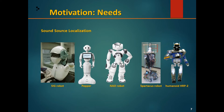Initially, most sound source localization studies used two microphones for binaural sound source localization, to mimic human hearing. However, as more studies emerged, they started using more microphones. The Spartacus robot and the humanoid HRP-2 robot, for example, each use eight microphones for sound source localization.